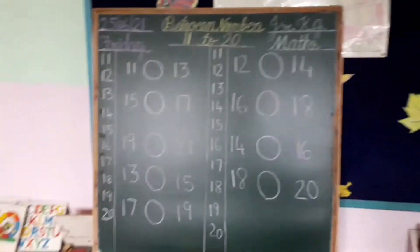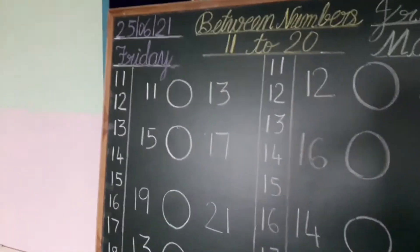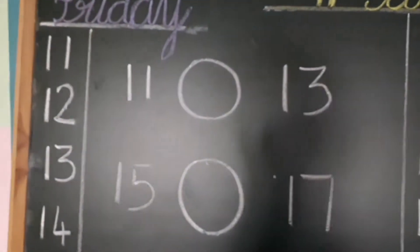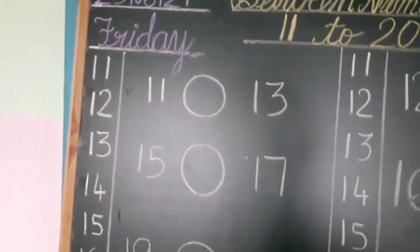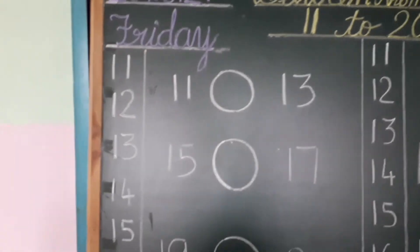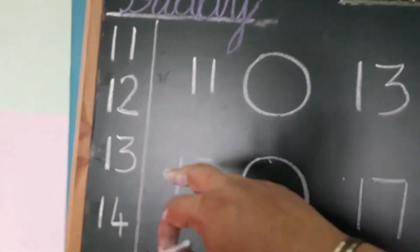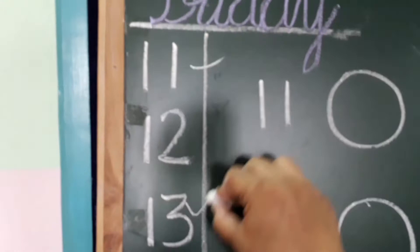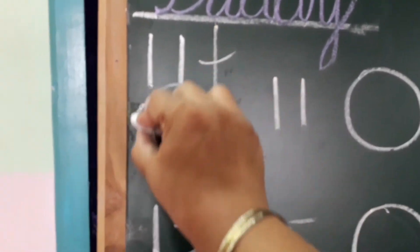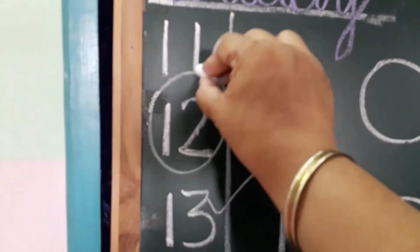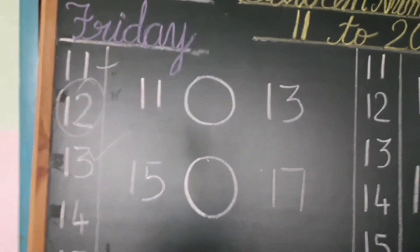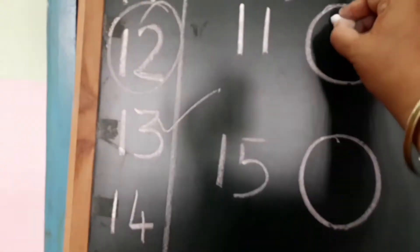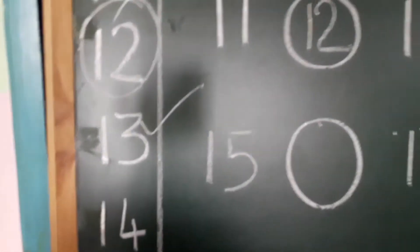So now, which number is this? 11 and 13. Speak: 11, 12, and 13. This number is 11 and this number is 13. So which number is between? 12. Yes, so you write here number 12.